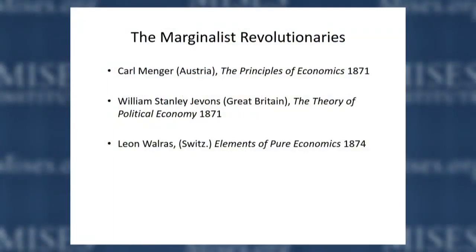There was the Austrian economist Carl Menger, who wrote Principles of Economics in 1871. At the time, he didn't know others were working along the same lines. One was William Stanley Jevons, who wrote The Theory of Political Economy in 1871 and also came up with a marginal utility approach. Then there was Leon Walras, a French-Swiss economist who, a few years later, without having read the previous two books, also arrived at an approach based on marginal utility.